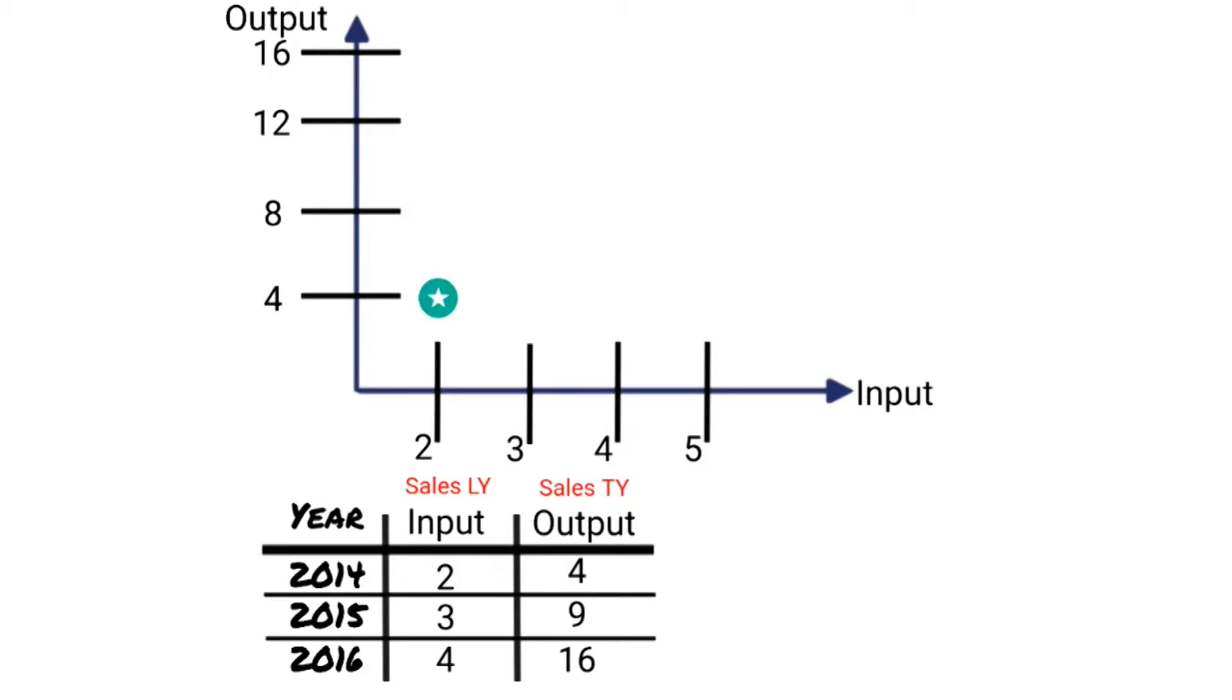Let's go ahead and graph these values. First row, 2, 4. Second row, input is 3, output is 9, it's about there. Third row, our input is 4, our output is 16, about there.